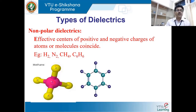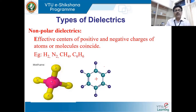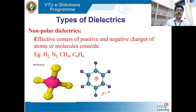Similarly, consider benzene C₆H₆, which has six carbon atoms each bonded to a hydrogen atom. The effective center of all carbon atoms comes exactly at the center, and so does the effective center of all hydrogen atoms. The positive and negative charges overlap, meaning there is no distance of separation, so the dipole moment is equal to zero — making it a non-polar dielectric.